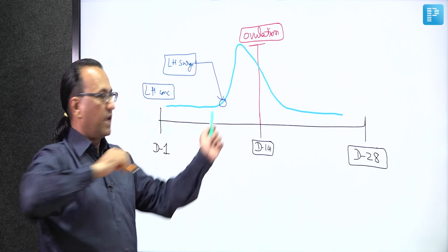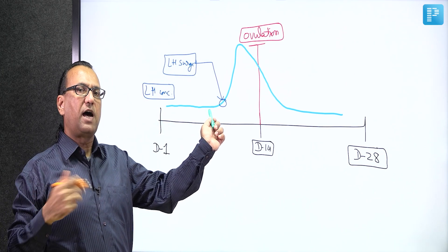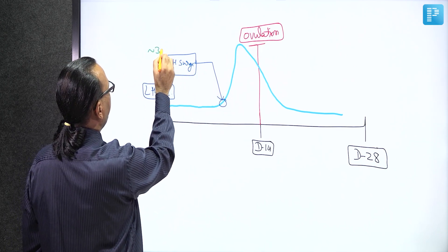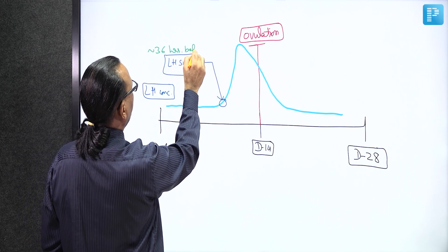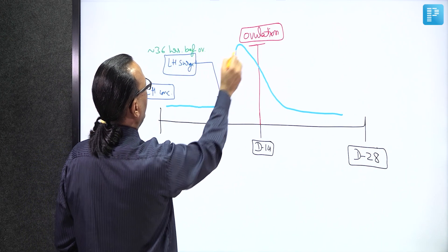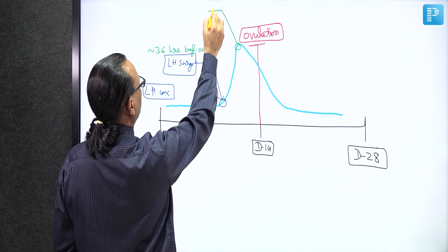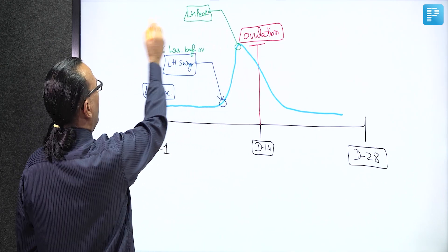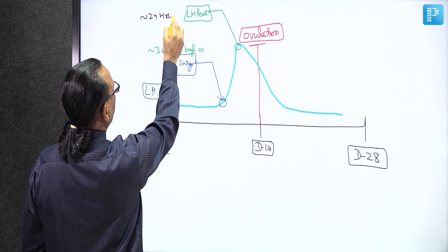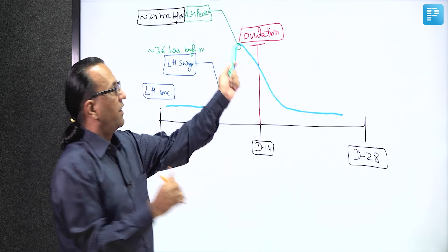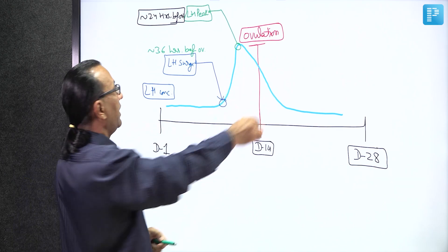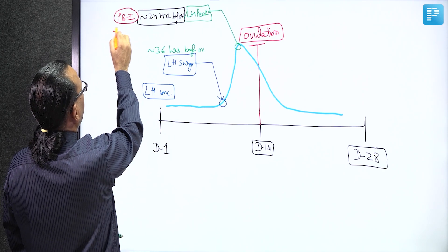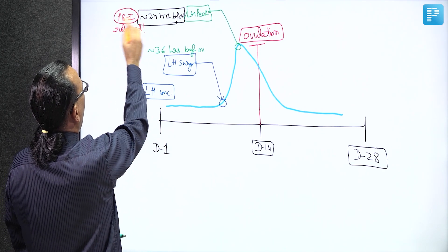The LH surge — a sudden rise in LH hormone concentration — occurs approximately 36 hours before ovulation. The LH peak, which is the peak concentration of LH hormone, occurs approximately 24 hours before ovulation. That is also the time when the first polar body is released. So polar body number one is released at the LH peak, which is 24 hours before ovulation.